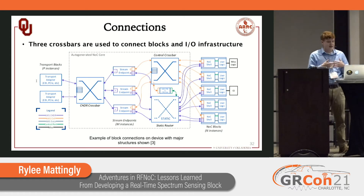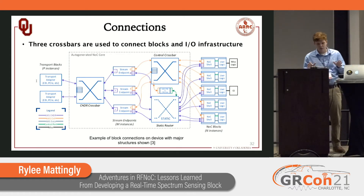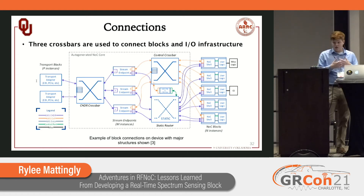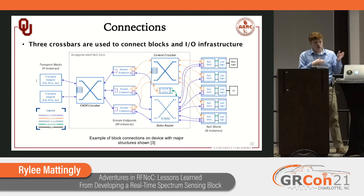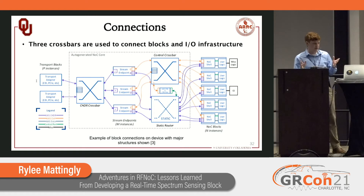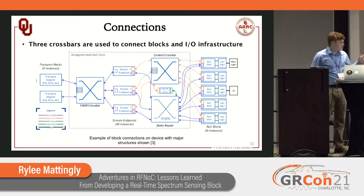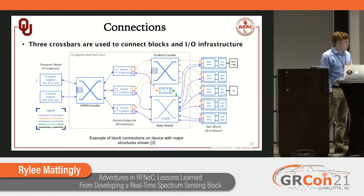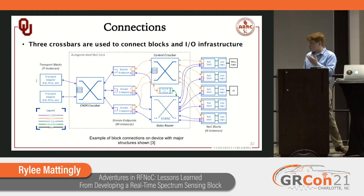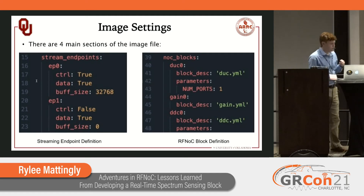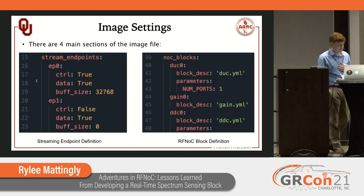If you want to change how your blocks are connected between runs, you'll want to connect it through the CHDR crossbar, which is a fully connected performance crossbar. To do that, we statically connect our block to the streaming endpoints. We can define streaming endpoints for each additional block we need to add to the image.